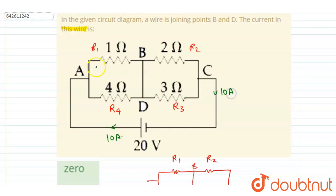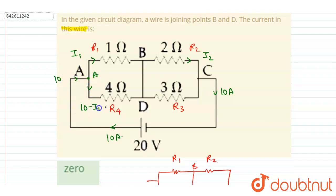Let's suppose the current in this branch is I1 and the current in this branch is I2. Applying the junction law at point A — 10 ampere current is flowing in, so in this branch the current will be 10 minus I1. Applying the junction law at point C, you will get the current through that branch equals 10 minus I2.